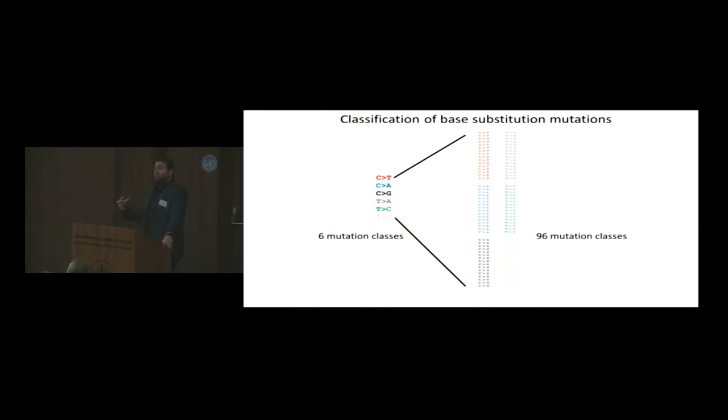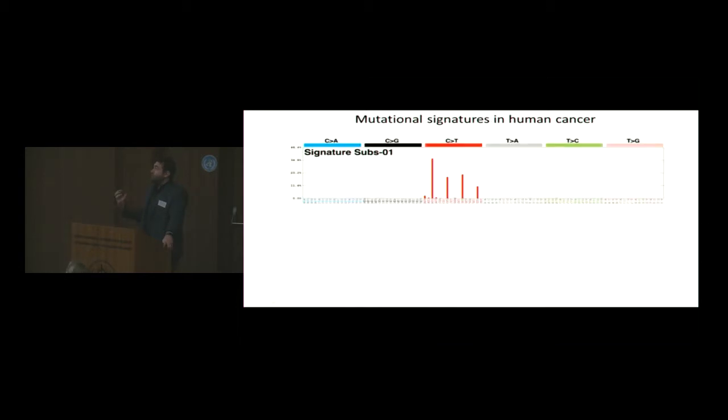96 mutation classes is proven to be very useful because we can visualize it. We can actually look at them. And we can also have enough power to extract them. I should say we have done larger analysis with more context. But for this presentation, I'm just going to focus on this specific set of mutational classes. This is the way a mutational signature looks. This is the color we use. C to A we display in blue, C to G in black, C to T in red, T to A in gray, T to C in green, and T to G in this slightly washed out type of pink.